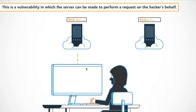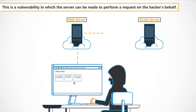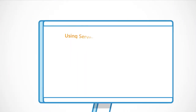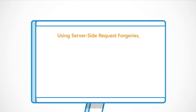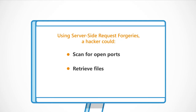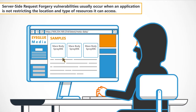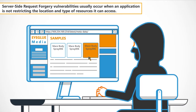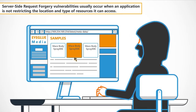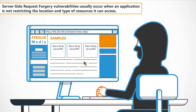SSRF is a vulnerability in which the server can be made to perform a request on the hacker's behalf. Using server-side request forgeries, a hacker could scan for open ports, retrieve files, or access internal services. These vulnerabilities usually occur when an application is not restricting the location and type of resources it can access.